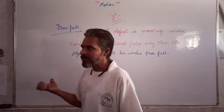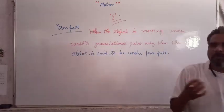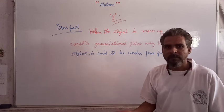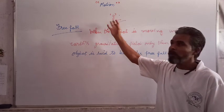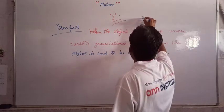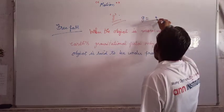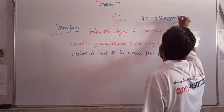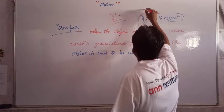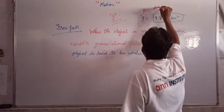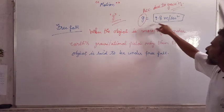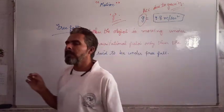Small g is the acceleration produced in any object by the Earth. The object experiences acceleration produced by the Earth when it is in Earth's gravitational field. That is called g — the acceleration due to gravity. The value of g, Earth's gravitational force, is 9.8 meters per second squared. So g is the acceleration due to gravity, the acceleration produced in all objects falling towards the Earth.